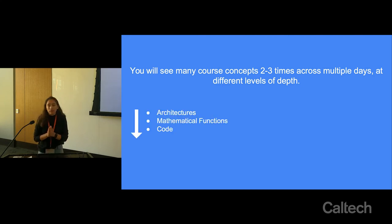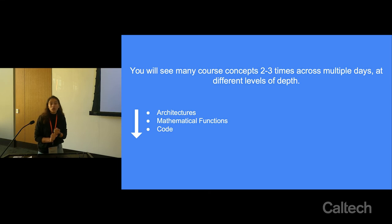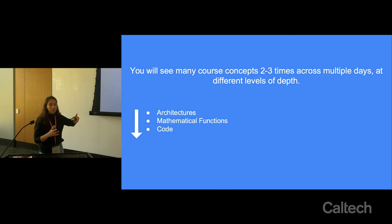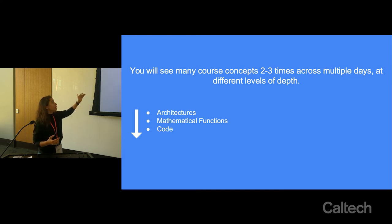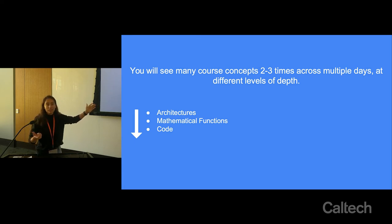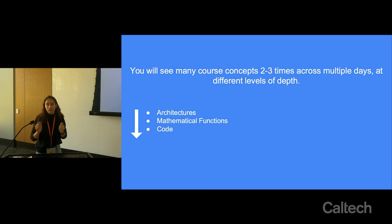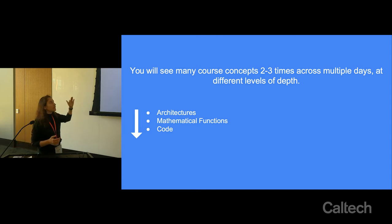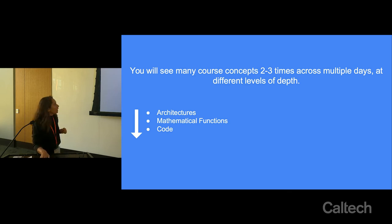For machine learning and deep learning problems, you might see questions about the architecture of a model, the mathematical function behind it, or the code. We want you to understand all three levels: how the architecture is set up, how that translates into the mathematical or loss function, and then how that loss function gets translated into code — whether run on a single data pair, a batch, or an entire dataset.